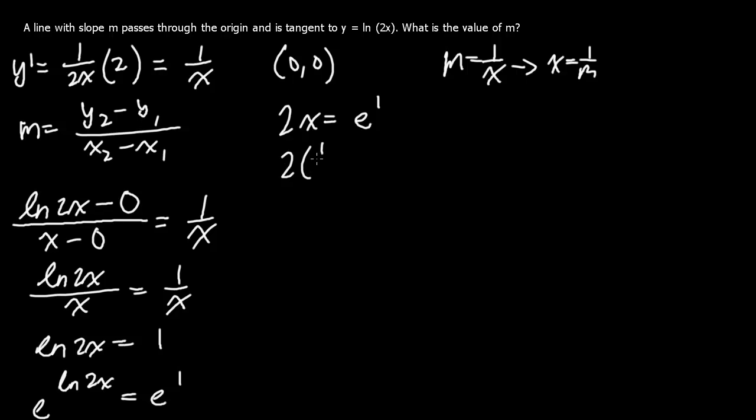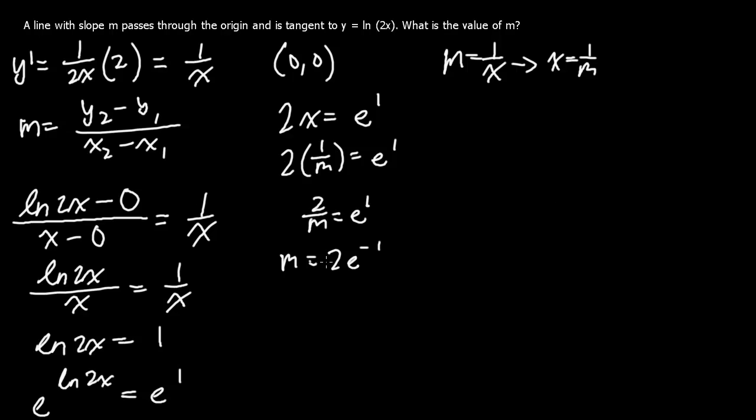So 2 times 1 over m would give you equal e to the first power. And we simplify, we should get m equals 2 e to the negative 1. And this should be the answer.